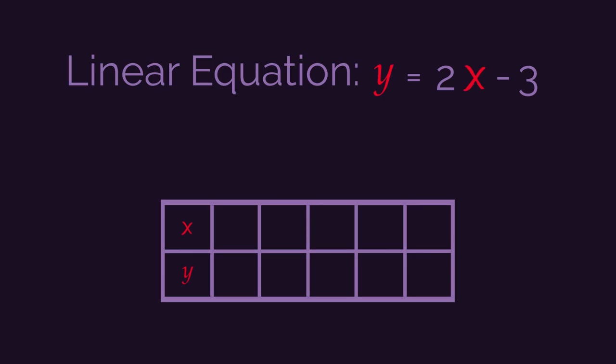I always start with 0, so substitute in 0 in place of x. So that means y equals 2 multiplied by 0 minus 3. So then y equals 0 minus 3, so y equals negative 3. And we can enter this into our table: when x is 0, y is negative 3.